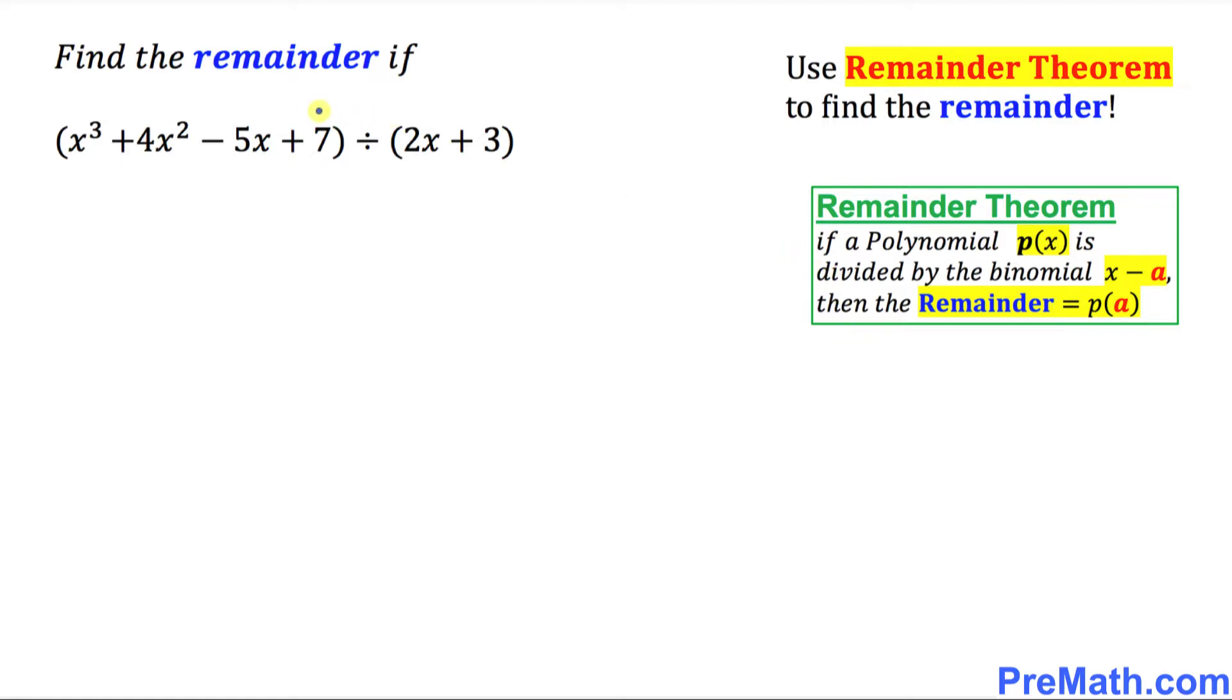Let's get started with our problem. Let's focus on our dividend part, this one over here. Call this one P(x). P stands for polynomial. So our P(x) is going to be equal to x³ plus 4x² minus 5x plus 7.